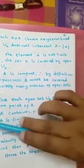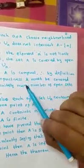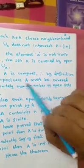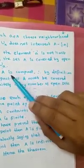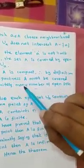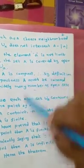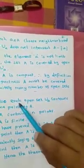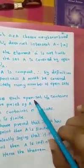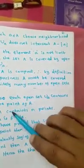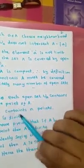But the set A is compact, as we just proved. So by the definition of compactness, A must be covered by finitely many open sets of the form U_a. Let the number of sets covering A be n: U_1, U_2, U_3, ..., U_{a_n}. Now each open subset U_a contains at least only one point of A, so having n open sets means A contains at most n points.